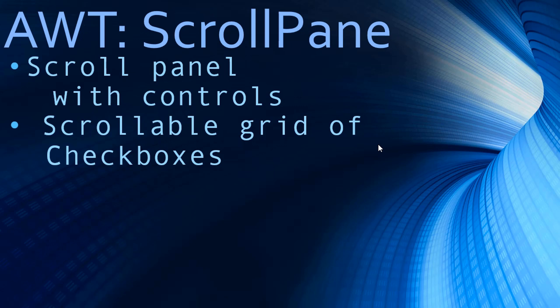Hello friends, in this video we are going to look at ScrollPane in Java AWT. The ScrollPane is useful to scroll the content which it contains — you can add a panel to the ScrollPane and then scroll that panel. In this Java AWT example, we are going to add a scrollable grid of checkboxes to our AWT frame window, achieved through the ScrollPane.